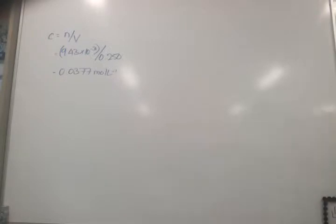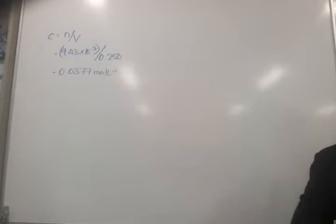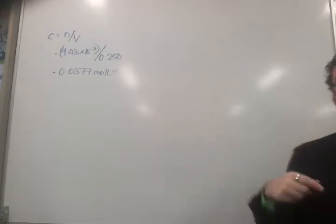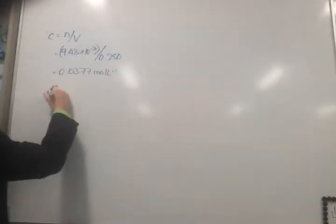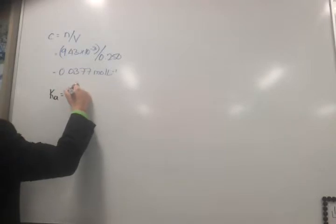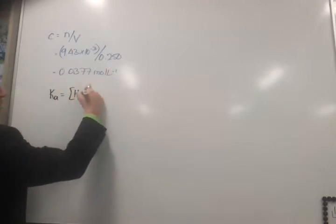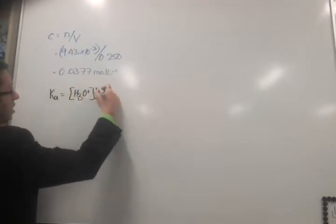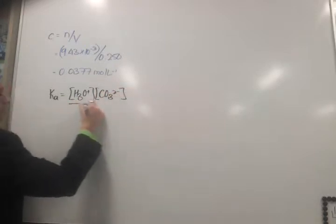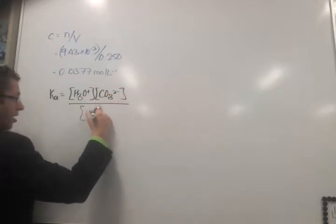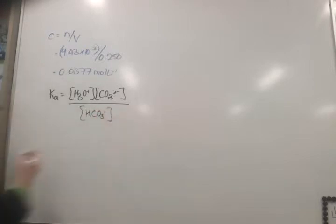Now, we've had to do a bit of working before we can actually work anything out. Now it's time to write our Ka expression from our equation. Because we've got all the information we need. We've got two concentrations and one unknown concentration.